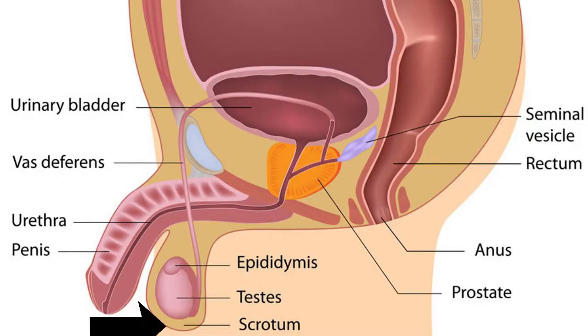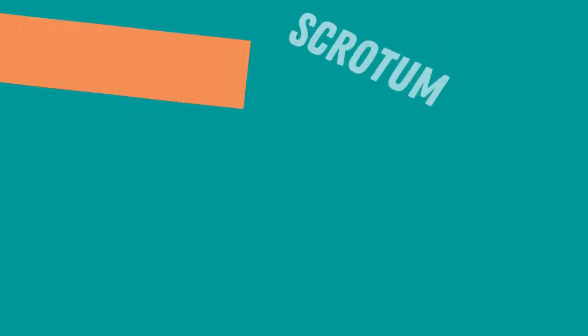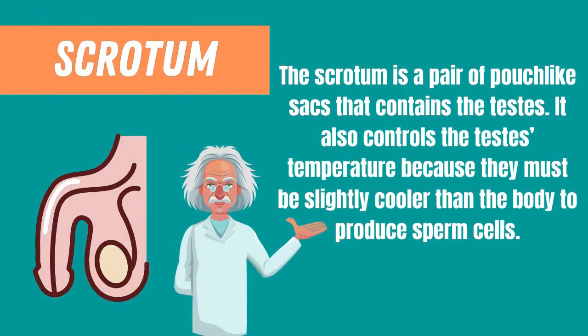The next one is the scrotum. The scrotum is a pair of pouch-like sacs that contains the testes. It also controls the testes' temperature because they must be slightly cooler than the body to produce sperm cells.